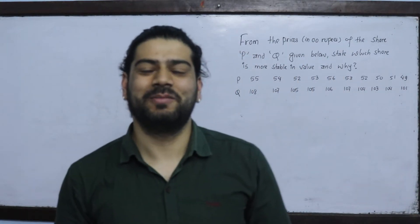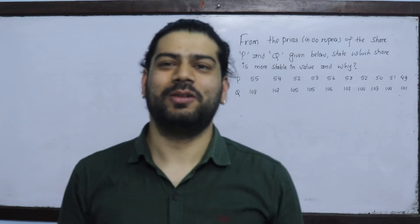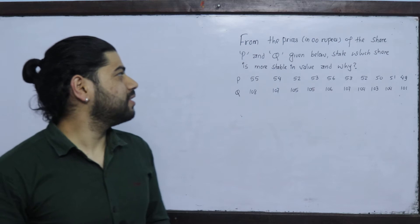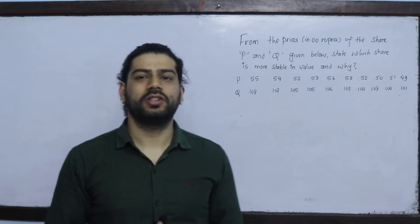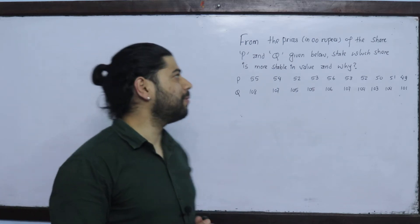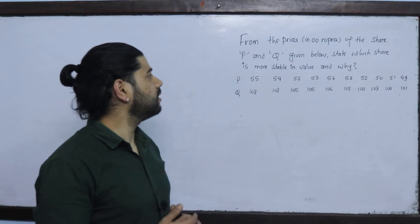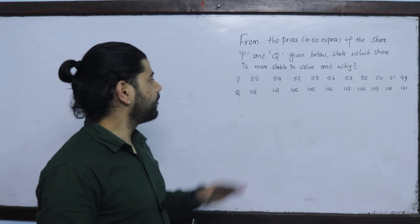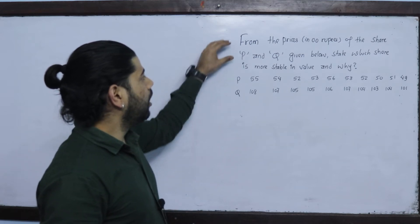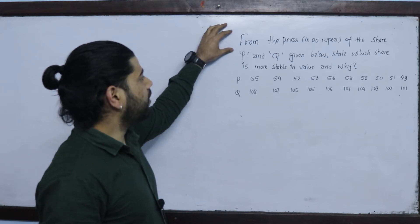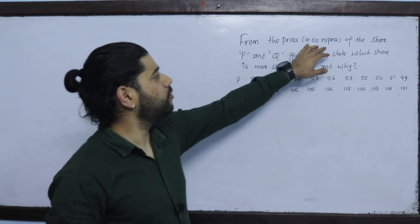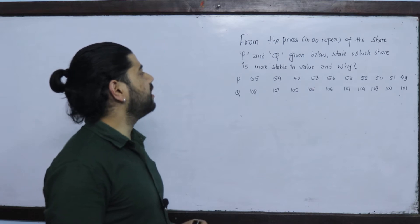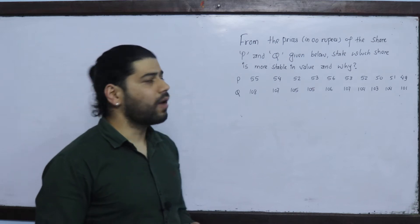Hello friends. I am going to solve the standard deviation of this problem. We will solve and find it. This is an individual series of data. From the prices and 100 rupees of shares P and Q given below, state which share is more stable in value and why.